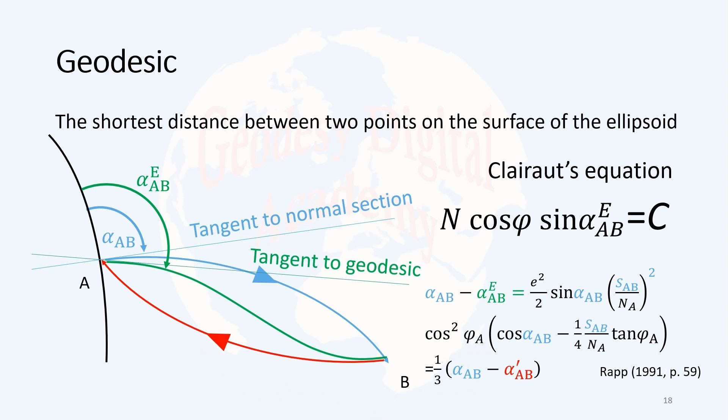A geodesic is the shortest distance between two points on the surface of the ellipsoid. Consider that neither the normal section nor its reverse form, shown by blue and red here in the figure, coincide. None of them is the shortest distance. Actually, the shortest distance is the geodesic, something between them with double curvature or torsion.